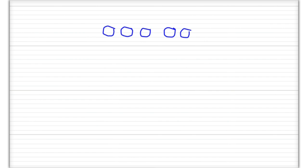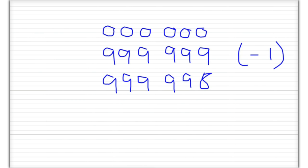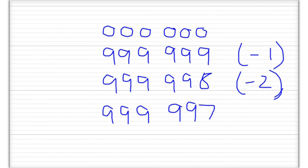To understand complements, first we'll look at the decimal system and think of decimal numbers using something like an odometer in a car. For example, if the odometer was showing 000000 and it went backwards by one, it would show 999999. Therefore, 999999 can be used to represent minus one, 999998 to represent minus two, 999997 to represent minus three, and so on.